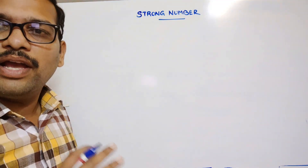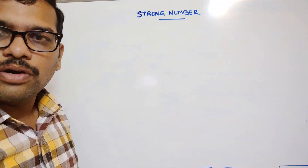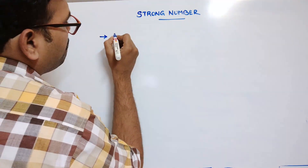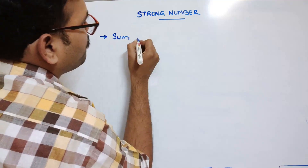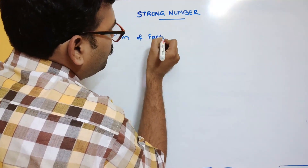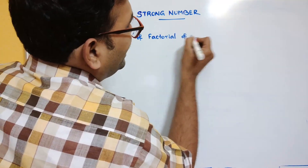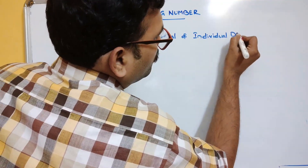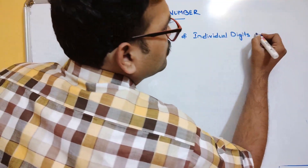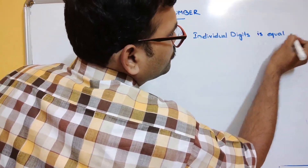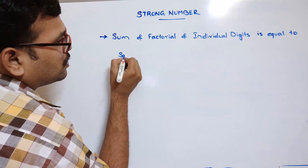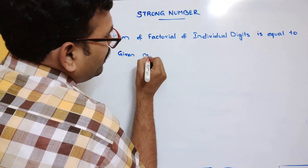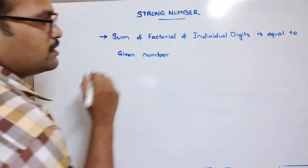So what is a strong number and how can we identify whether a number is a strong number or not? If you consider any number and the sum of the factorial of individual digits is equal to the given number, then we can say it is a strong number.